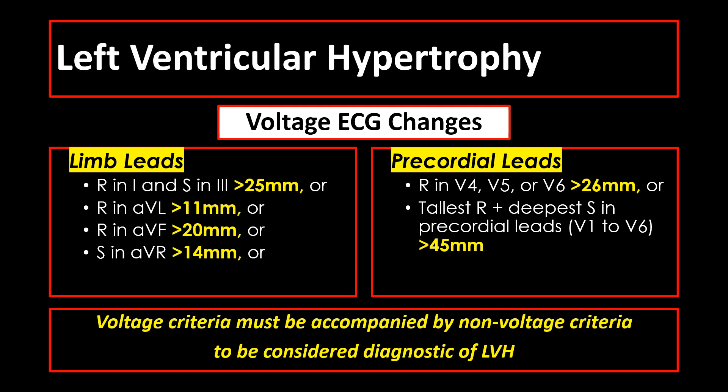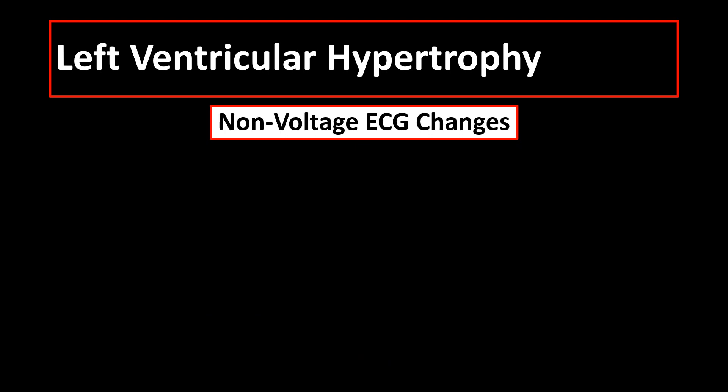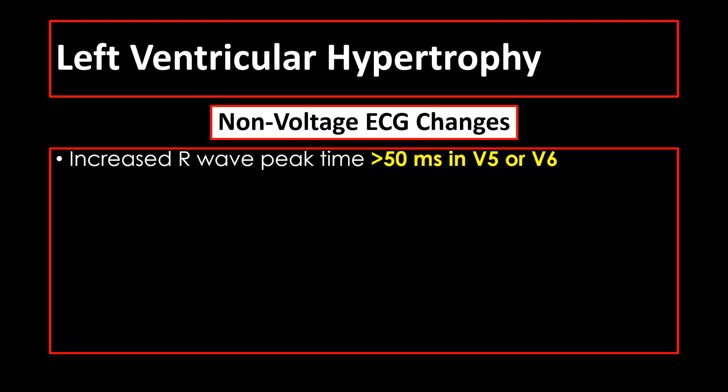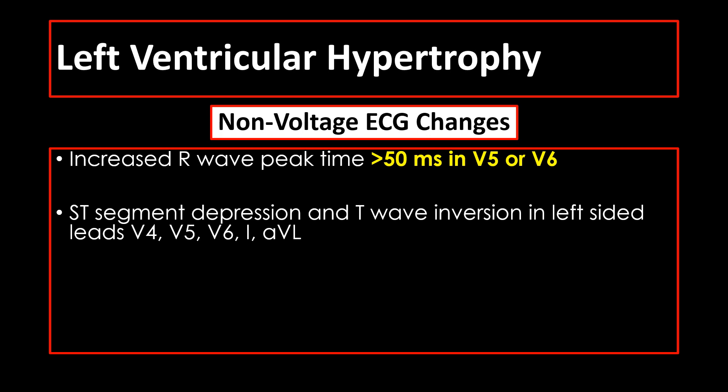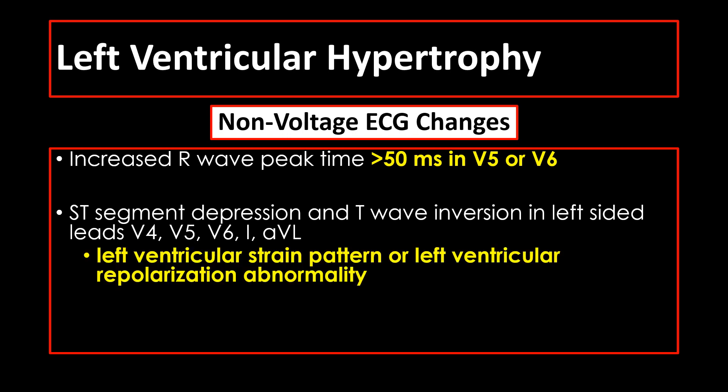Voltage criteria must be accompanied by non-voltage criteria to be considered diagnostic of left ventricular hypertrophy. The non-voltage ECG changes indicative of LVH are: increased R wave peak time duration more than 50 milliseconds in V5 or V6; and ST segment depression and T wave inversion in left-sided leads V4, V5, V6, 1, or AVL, signifying left ventricular strain pattern or left ventricular repolarization abnormality. This strain pattern is quite challenging to differentiate from ECG changes of ischemia, so we may just report LVH with strain pattern and/or lateral wall ischemia.